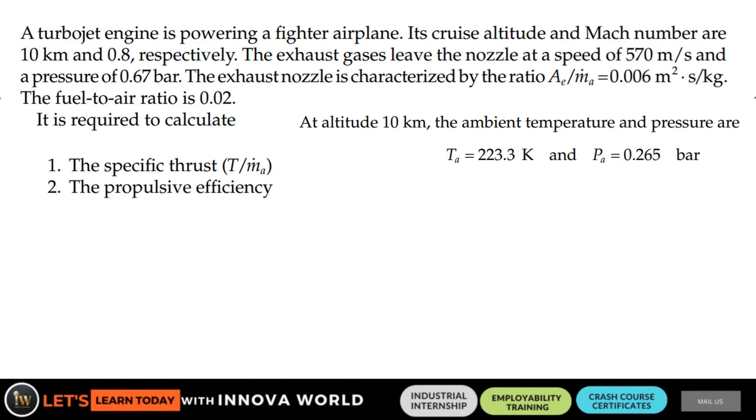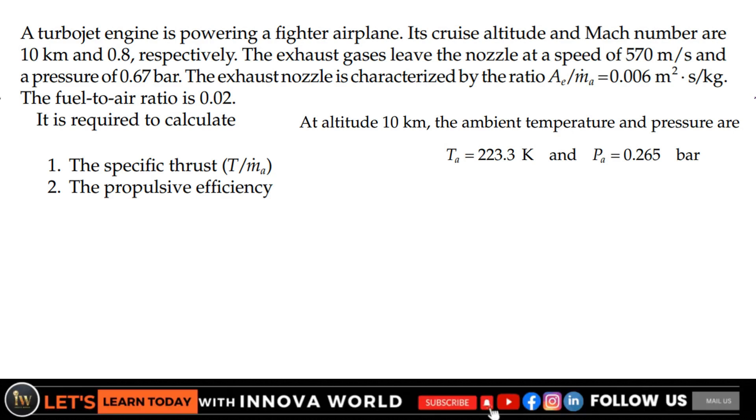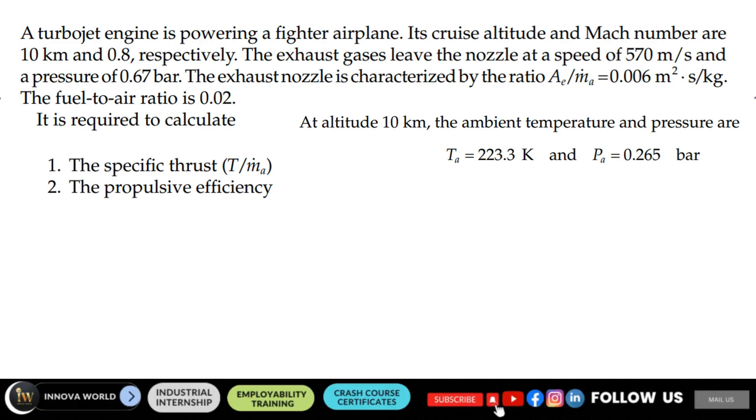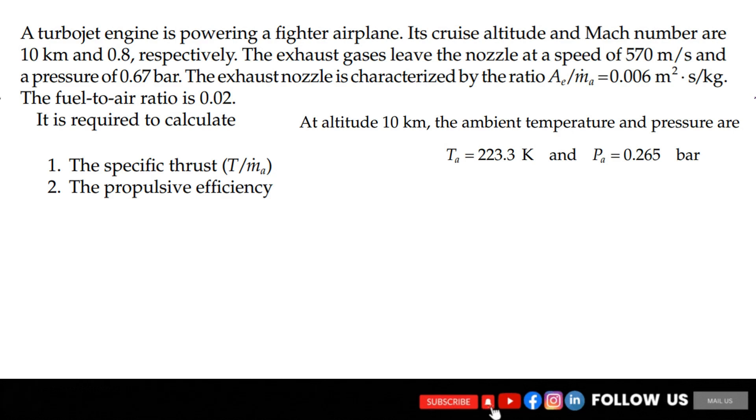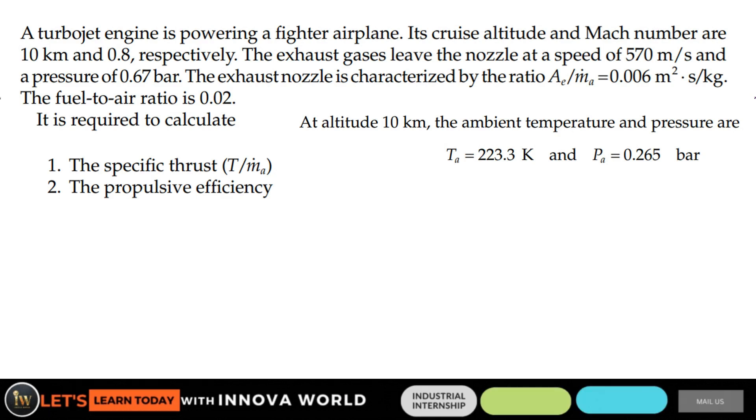The exhaust nozzle is characterized by the ratio Ae/ṁa. The fuel-to-air ratio is 0.02. Two parameters are required to find: specific thrust and propulsive efficiency. At 10 km altitude, the ambient temperature and pressure are Ta = 223.3 K and Pa = 0.265 bar.